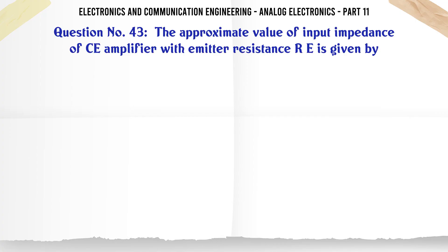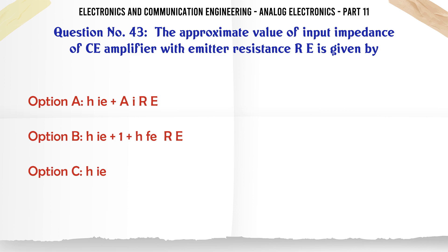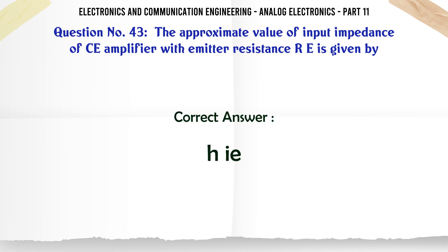The approximate value of input impedance of CE amplifier with emitter resistance RE is given by. A. H_IE + (1 + H_FE) * RE. B. H_IE * (1 + H_FE) * RE. C. H_IE. D. (1 + H_FE) * RE / H_IE. The correct answer is: H_IE + (1 + H_FE) * RE.